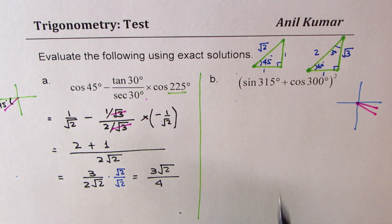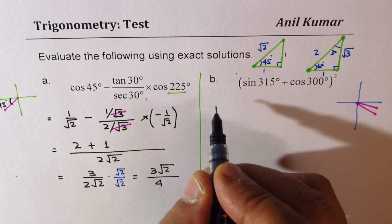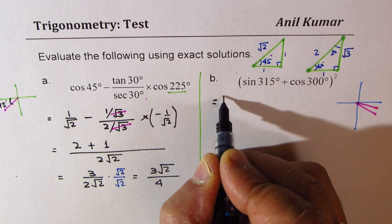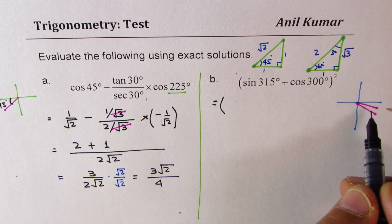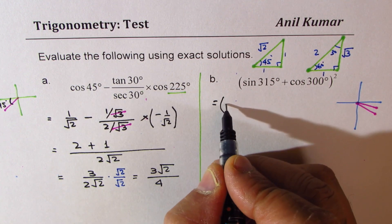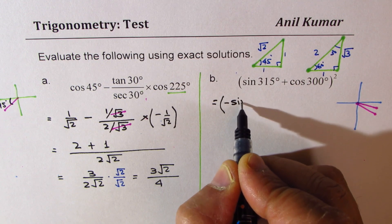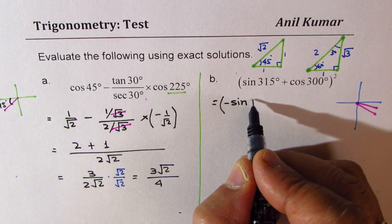So that means we are looking for acute angles. We could write this as equal to... So 315 is basically minus sine of 45 degrees.